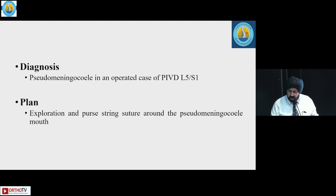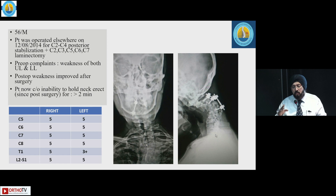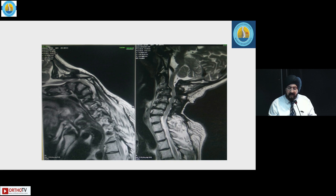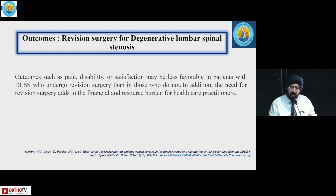Another scenario: a patient operated elsewhere for C2-C4 posterior stabilization and C2-C7 laminectomy had weakness that improved but developed a drop neck. Quality of life was totally compromised, and an occipito-cervical fixation was performed to restore that quality of life.